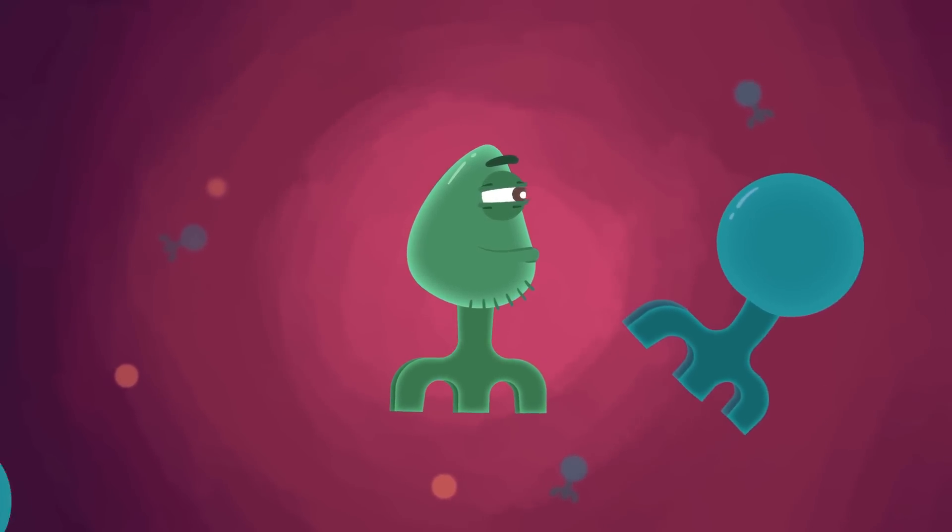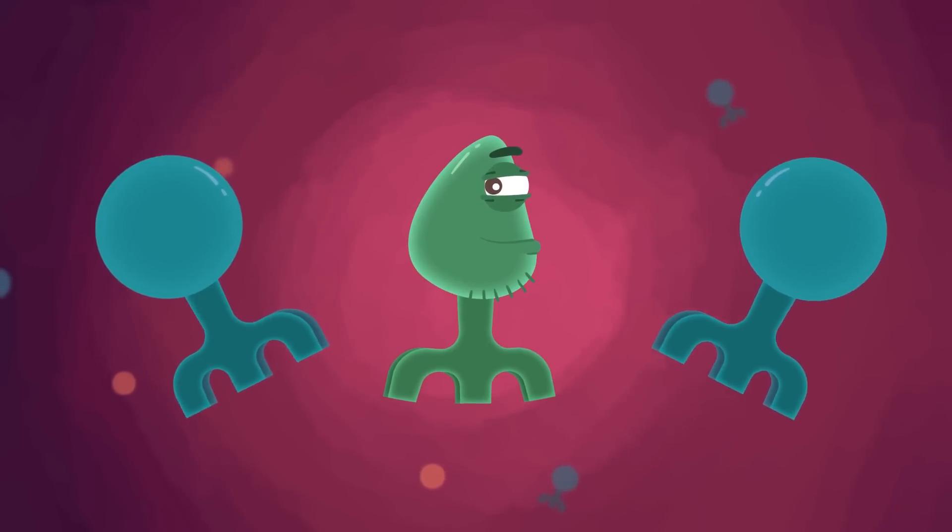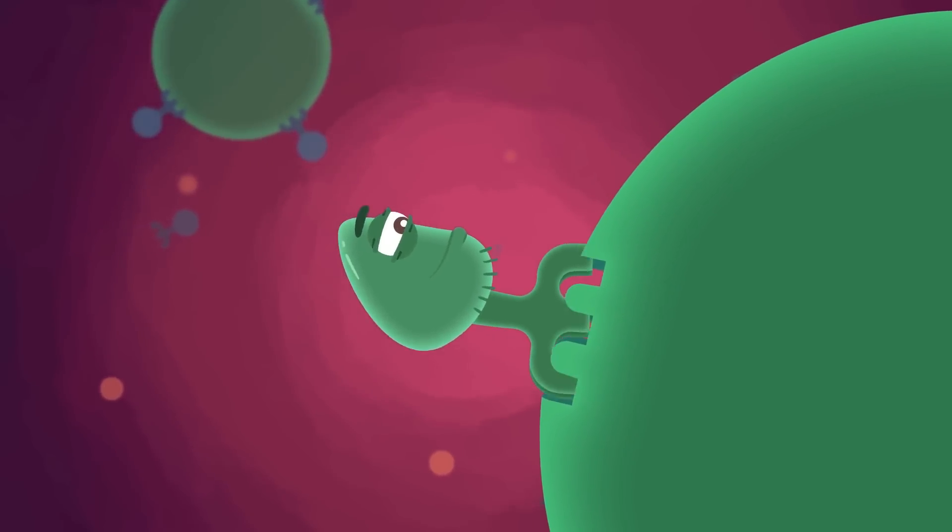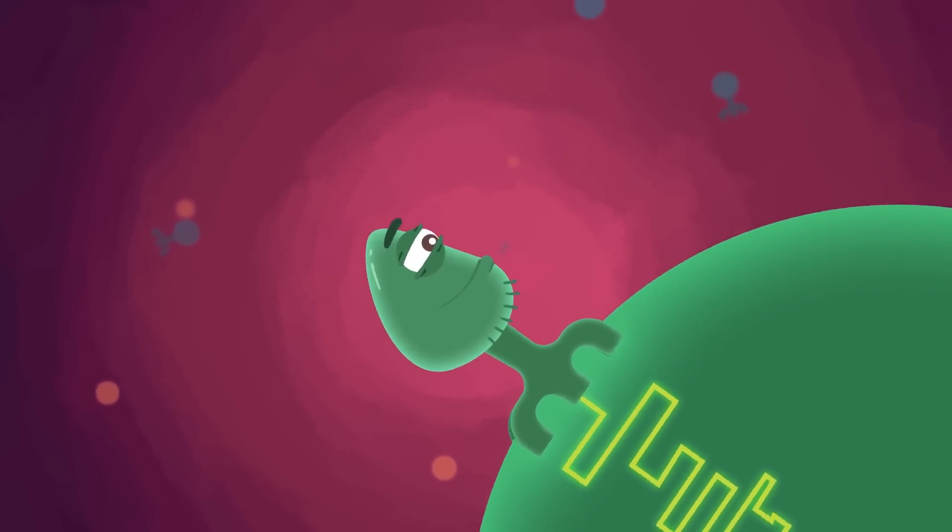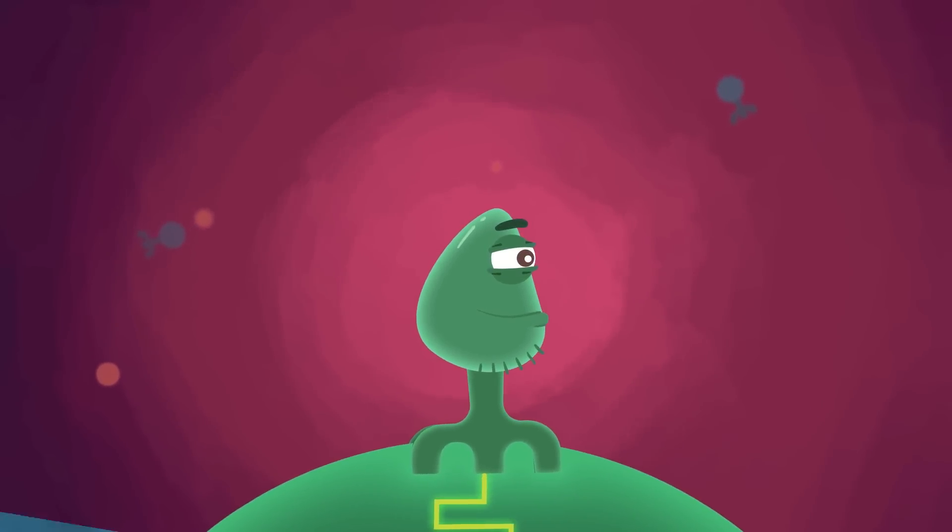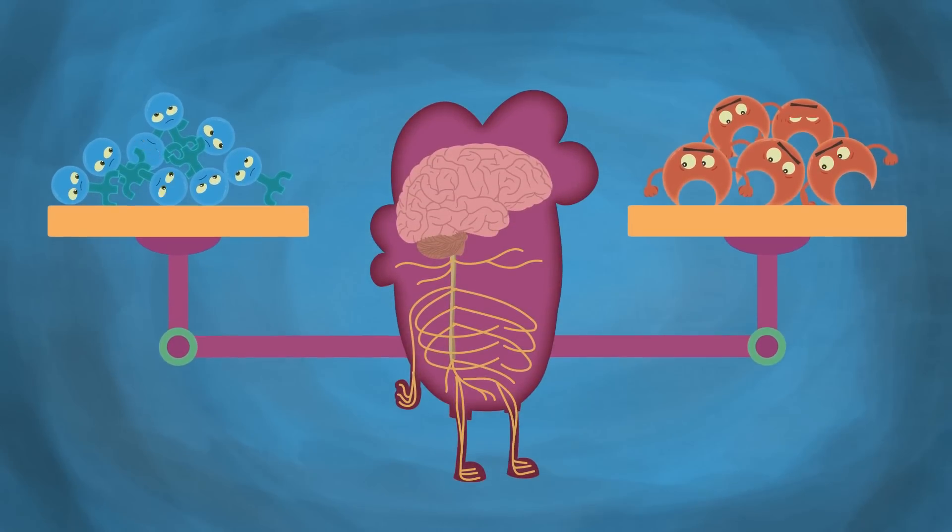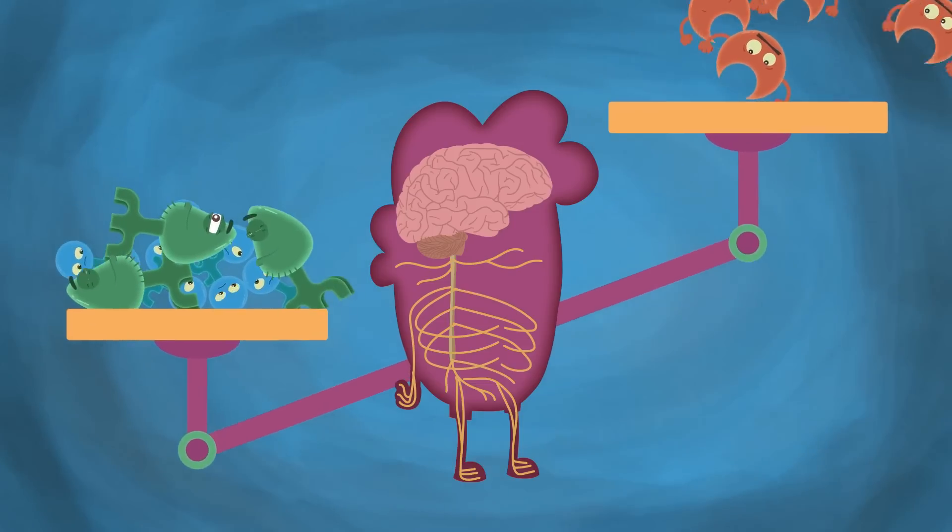Since THC's chemical structure is similar to naturally occurring endocannabinoids, the body allows THC to attach to endocannabinoid receptors in the brain. When THC enters the body, it overwhelms the endocannabinoid system, attaching to cannabinoid receptors and throwing the body and brain off balance.